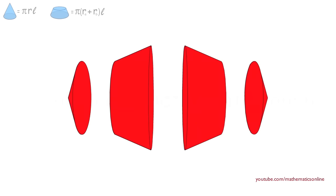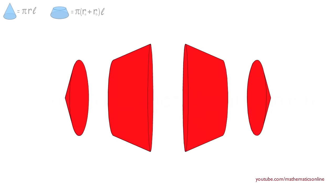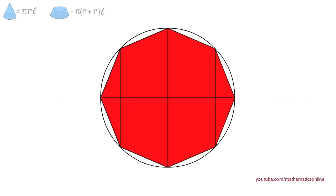Next, let's take a two-dimensional view of our shape, and we can see the equilateral polygon that is inscribed inside the sphere. We will label the vertices with capital letters, and we label all the sides with the letter S.